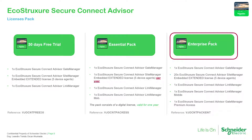Now let's analyze the enterprise pack. It also has one gate manager and one link manager, but it's a gate manager premium. The key difference is that the enterprise pack includes up to 20 extended licenses. So we can have up to 20 Harmony HMIs with five device agents each, covering up to 100 device agents to connect under those HMIs.